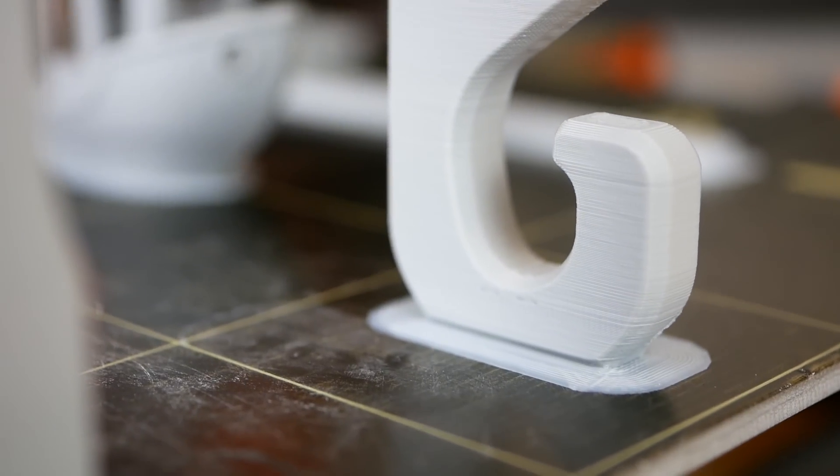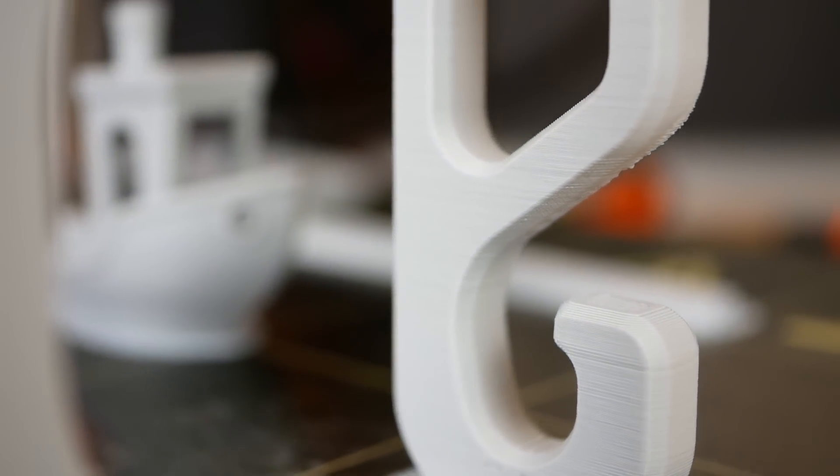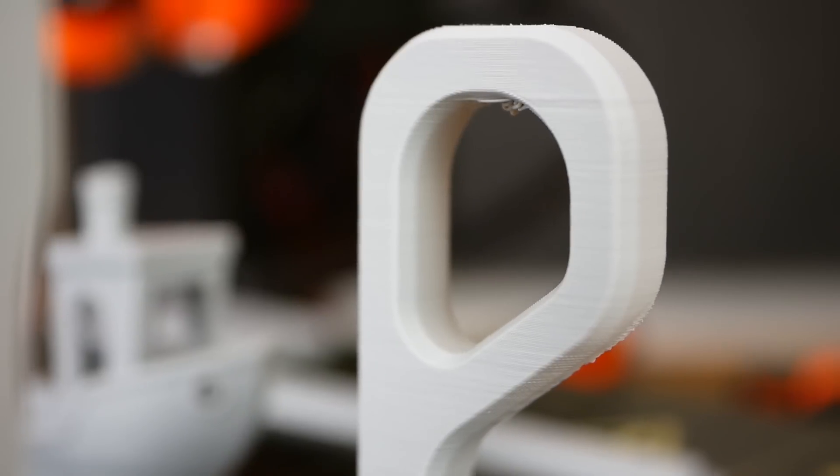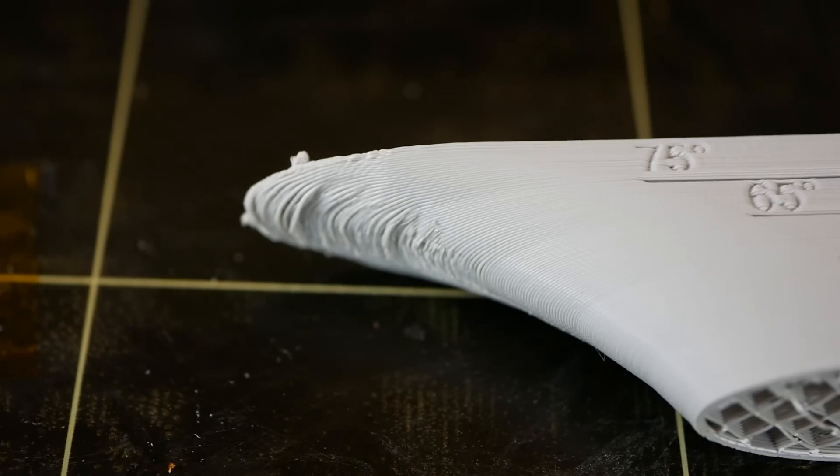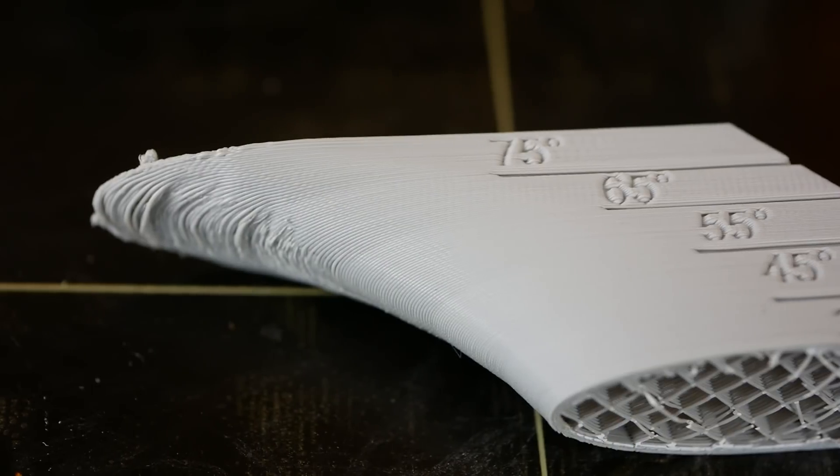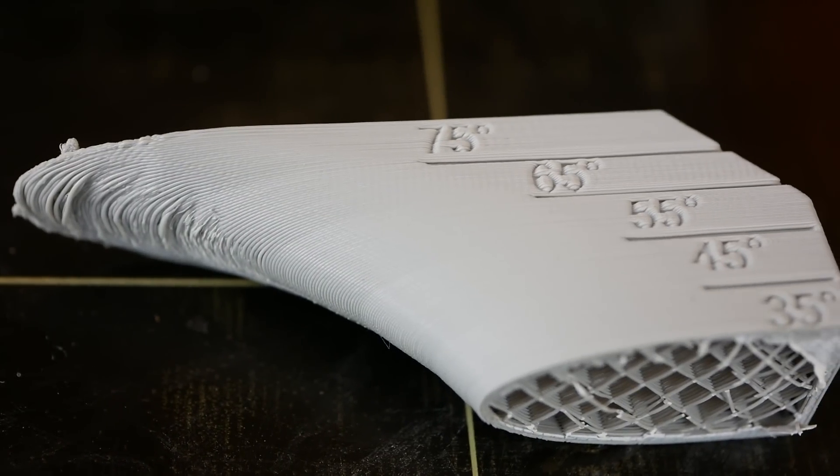The ASA stuck very well to the glue stick covered PEI print bed of my Prusa which was heated to 100 degrees. Some of the parts even stuck too well which ended up in a broken part or a piece of PEI being ripped out.